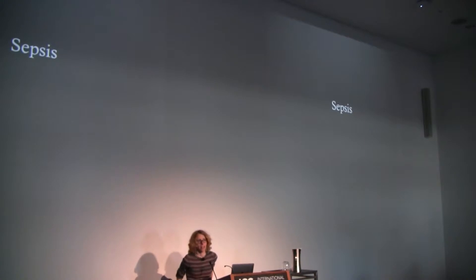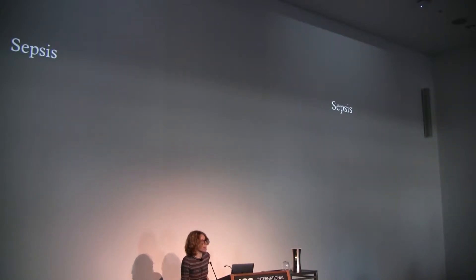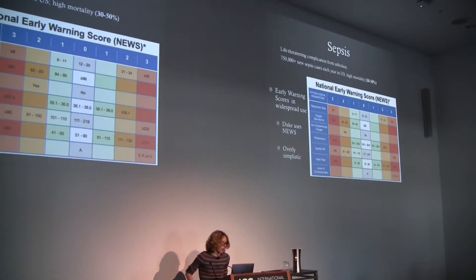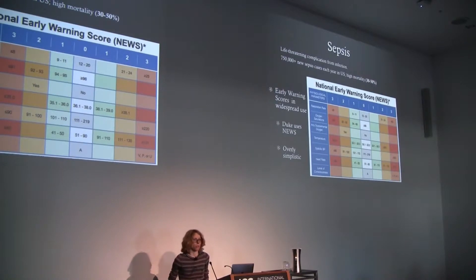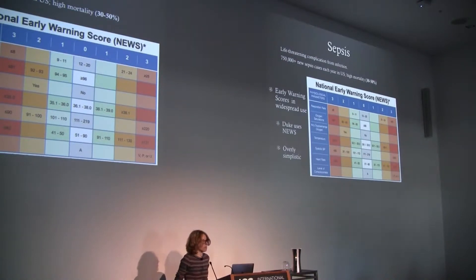The next thing we're working on along similar modeling lines is sepsis — trying to predict whether a patient admitted to Duke University Hospital is at risk of having sepsis. This will also use Gaussian process longitudinal models. Sepsis is a life-threatening complication from infection. There are over 750,000 new sepsis cases every year in the U.S., with a very high level of mortality: 30 to 50% of people diagnosed with sepsis end up dying. If you can predict sepsis early and start treating it early, the mortality rate improves.